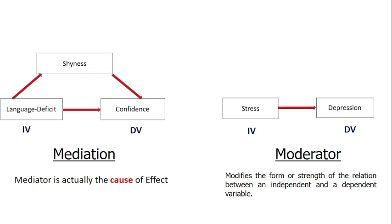In the case of the moderator, the moderator basically modifies the form or the strength of the relation between the dependent and independent variable. Depression is being caused by stress, but there is a variable — social support — which can modify and impact the strength of that relationship. If there is more social support available, it can result in lower depression; if there is no or less social support, there will be more depression. Social support is not the result of stress — it only impacts the relationship and strength between the dependent and independent variable.